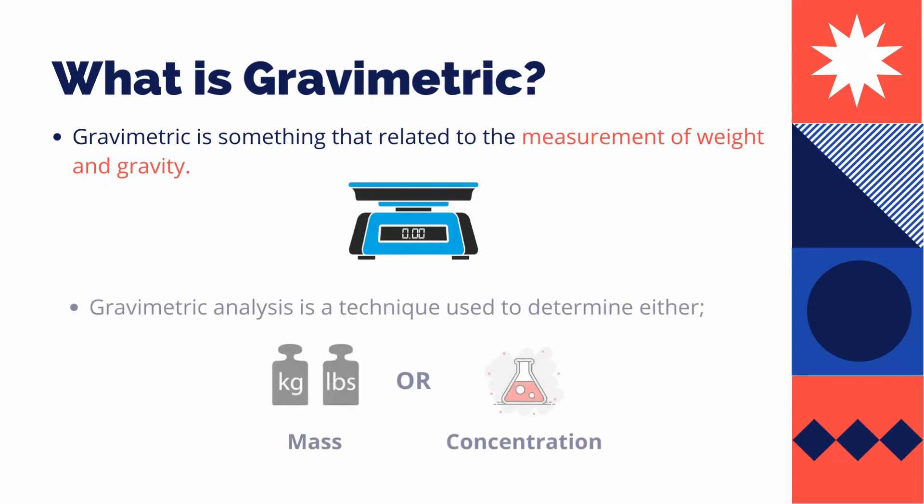In general, gravimetric analysis is a technique used to determine the mass or concentration of a substance by measuring a change in mass.